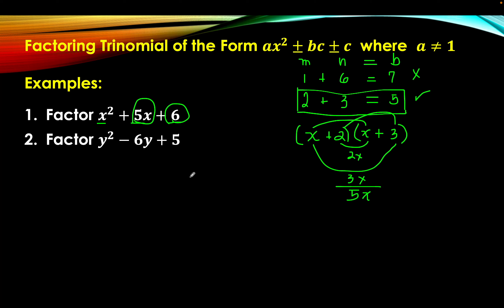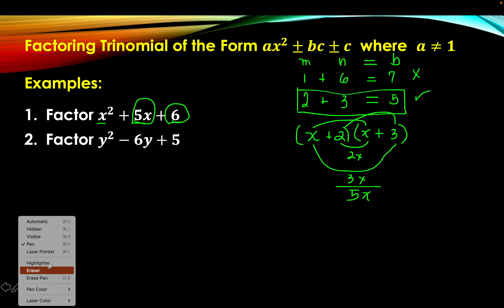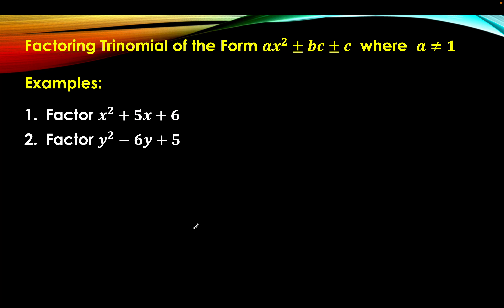Let's have another example. Factor y squared minus 6y plus 5. Step 1: list all pairs of integers whose product is 5. Luckily, 5 is a prime number, so there is only one pair of integers that satisfies this condition: 1 and 5. Now let's consider the middle term, which is negative.